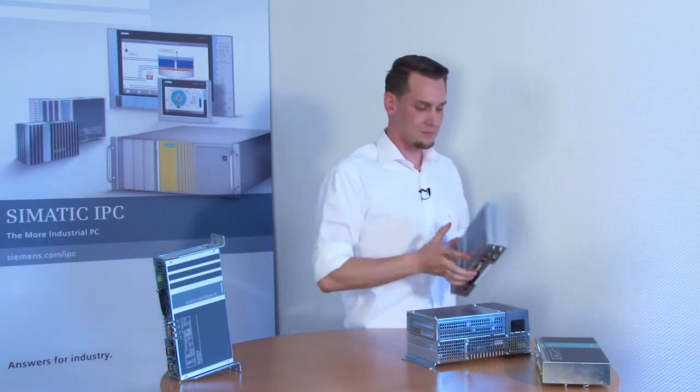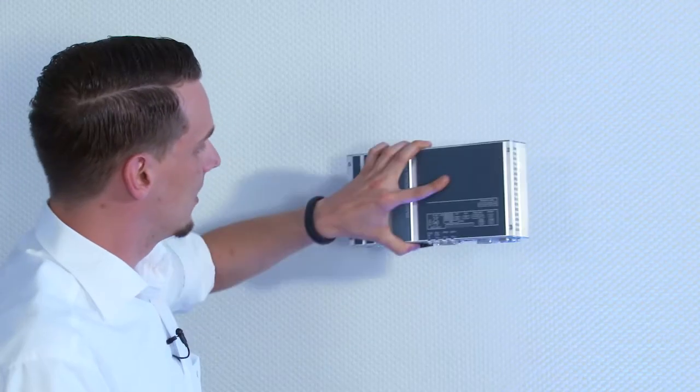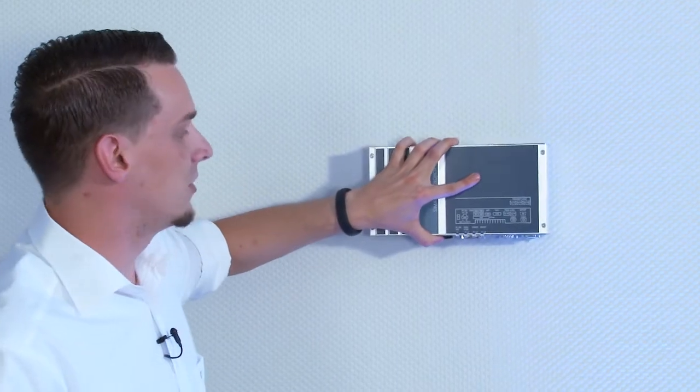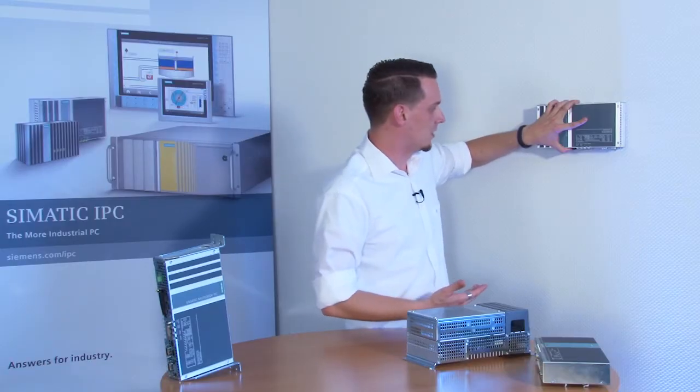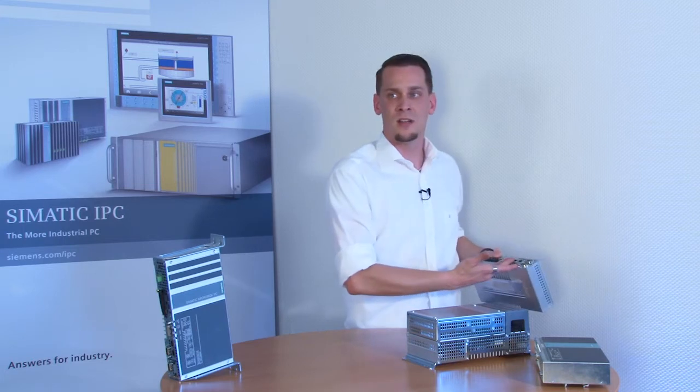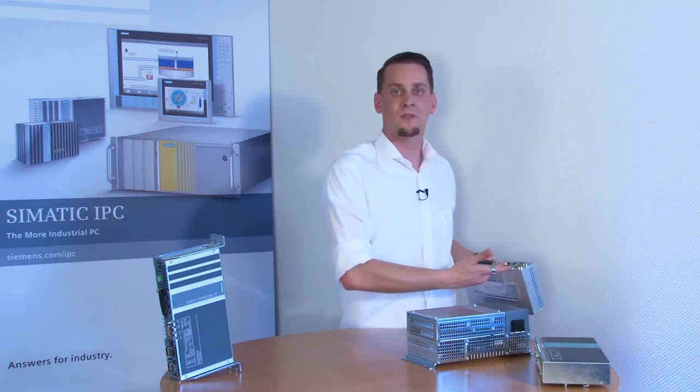Another version is rail mounting. Here too, I can quickly and easily snap the device onto the rail in the switchgear cabinet. In this case, all interfaces are accessible from the bottom, which ensures quick, simple cabling.